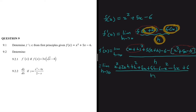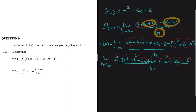Every term without h cancels out: x² and minus x² give 0, plus 5x and minus 5x give 0, minus 6 and plus 6 give 0. So what we're left with in the numerator is just 2xh + h² + 5h.